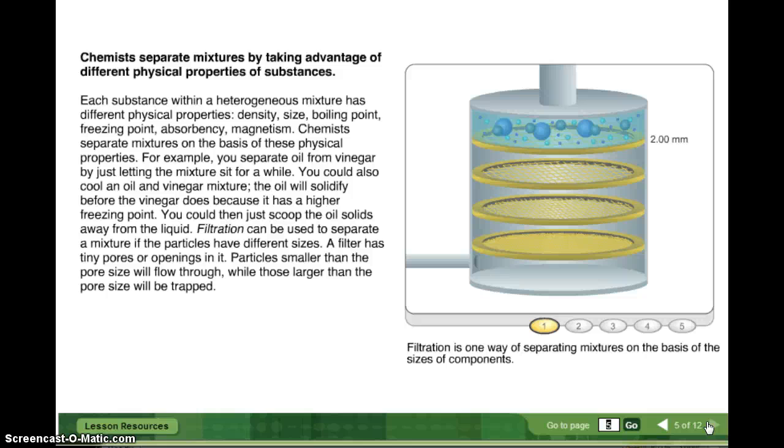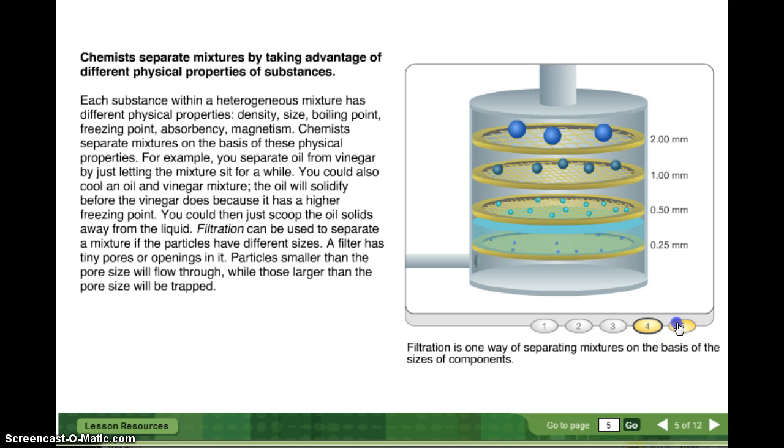Filtration can be used to separate a mixture if the particles have different sizes. A filter has tiny pores or openings in it. Particles smaller than the pore size will flow through, while those larger than the pore size will be trapped. All right, we have different screens and you can tell that the different screens have different sized holes. So they put it in the first one and the largest molecules are stuck. Well, now the holes in this next screen are only one millimeter. So the next largest gets stuck and then the next largest gets stuck and the next largest gets stuck and the liquid makes it all the way to the bottom. You might have forgot about the liquid. Don't forget about the liquid part when you are doing filtration. So it's simply using a filter, whether it's a screen or filter paper like for coffee machines, and they use that in order to separate out the mixture.